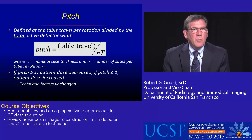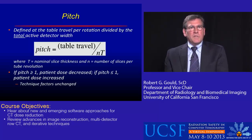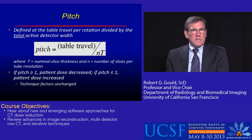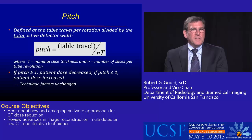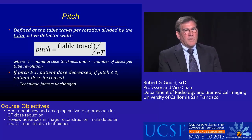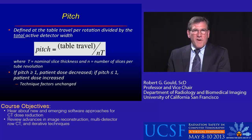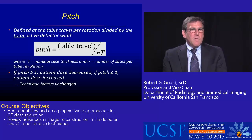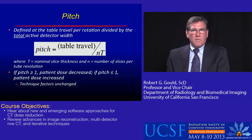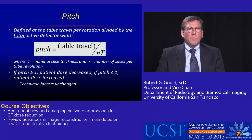Pitch is defined as the table travel divided by the z-axis beam thickness, NT. If the pitch is greater than 1, we actually reduce patient dose. If the pitch is less than 1, patient dose is increased relative to conventional axial imaging. So the software was modified to account for helical acquisition, and dose savings can be achieved using a pitch greater than 1.